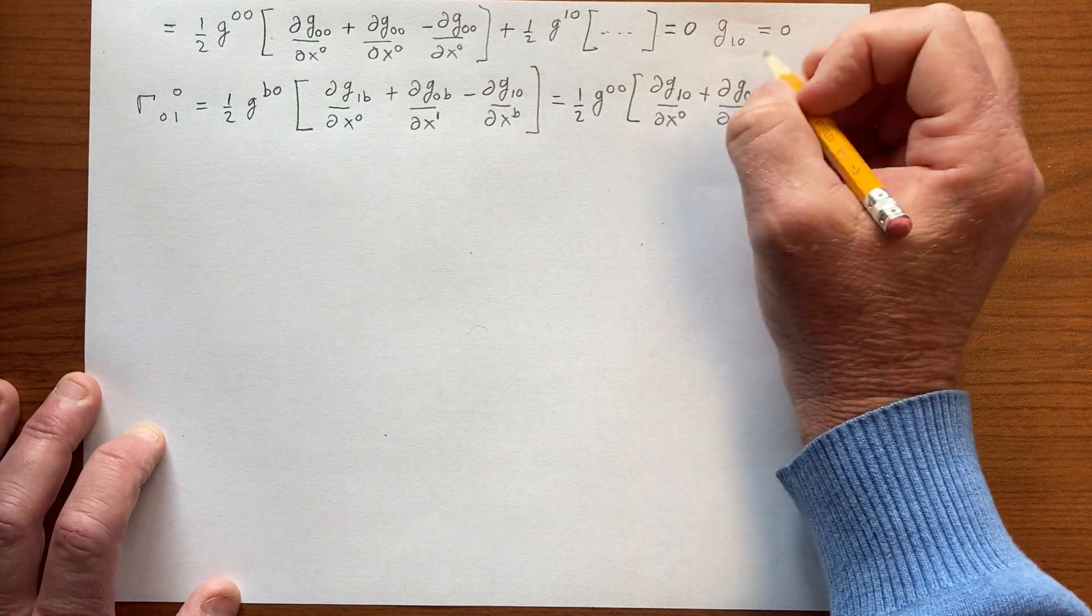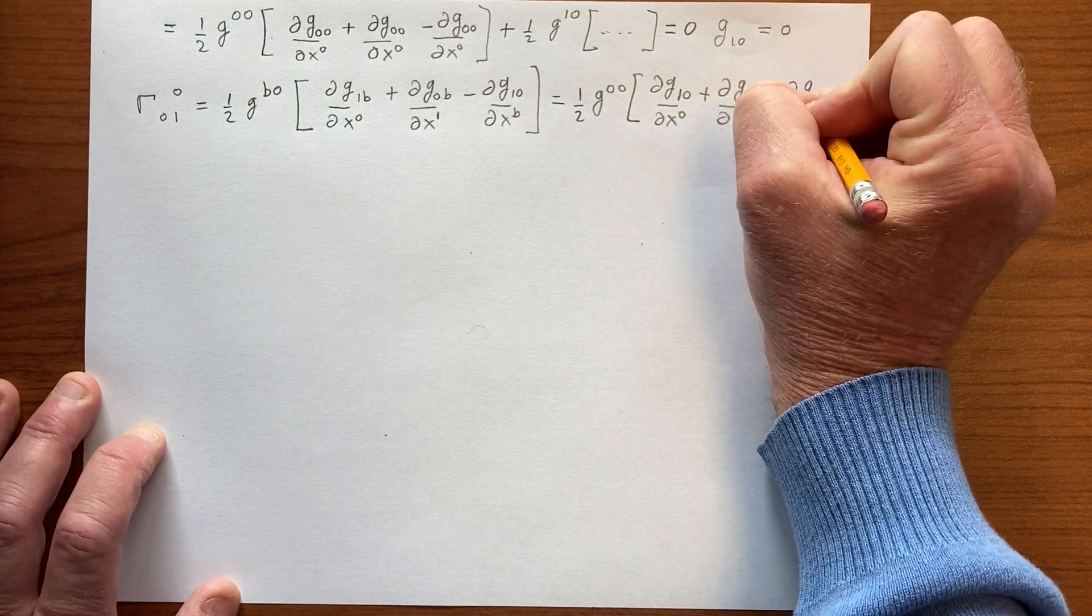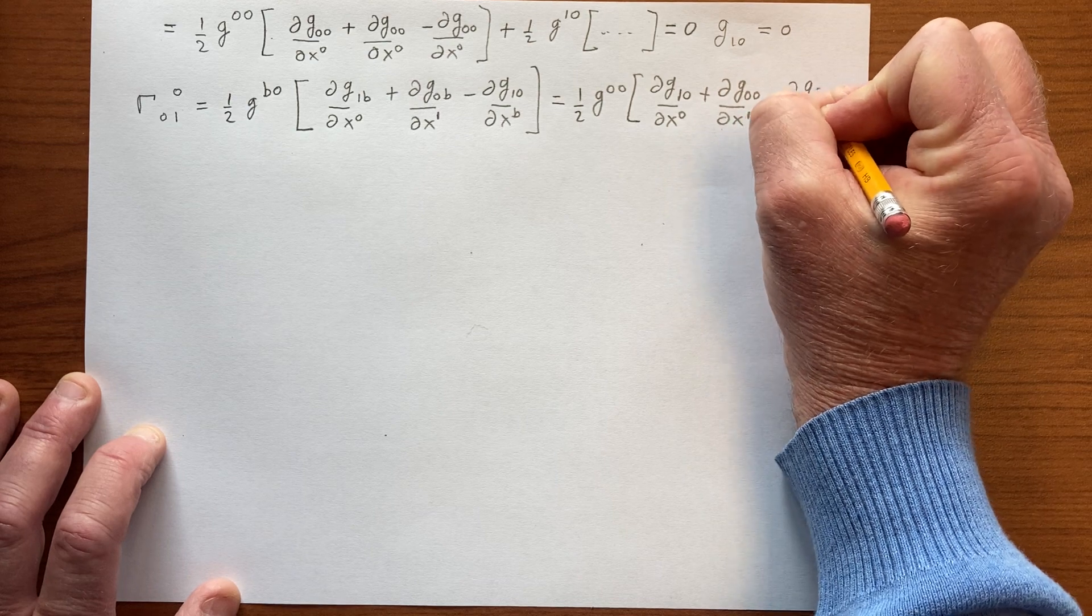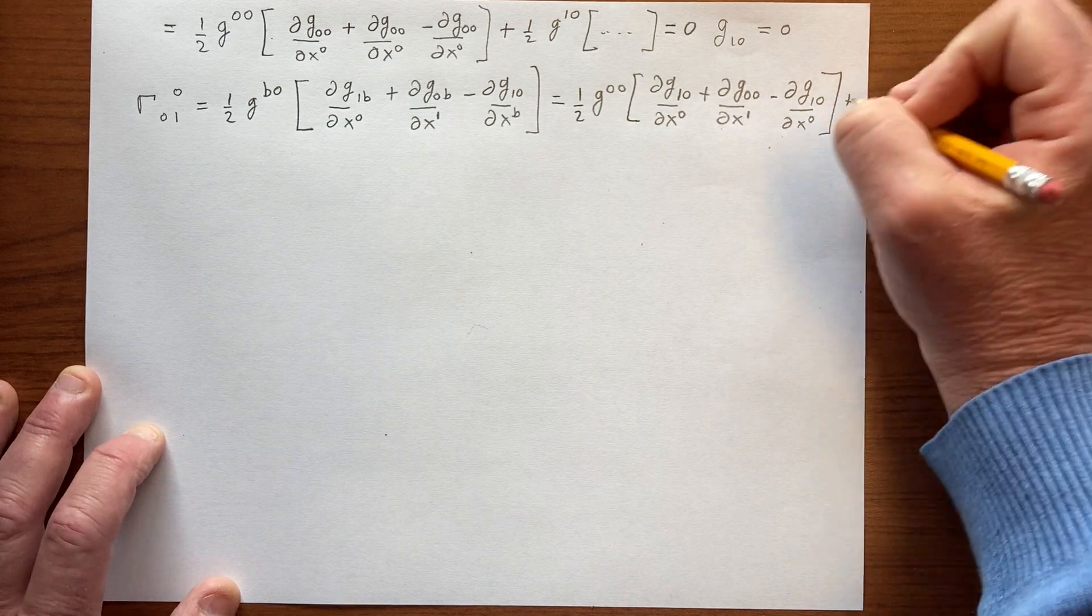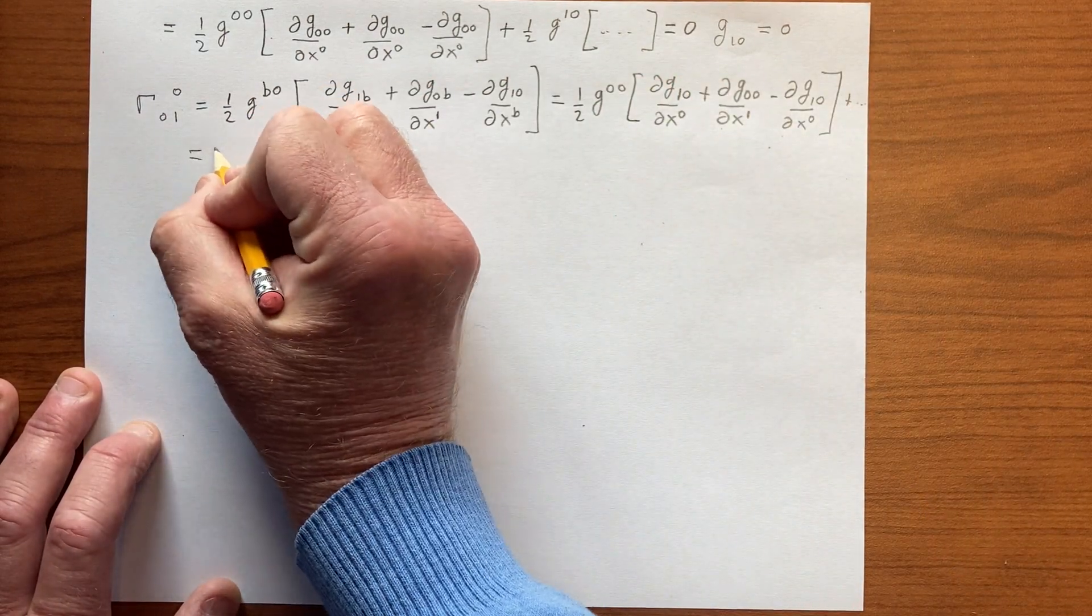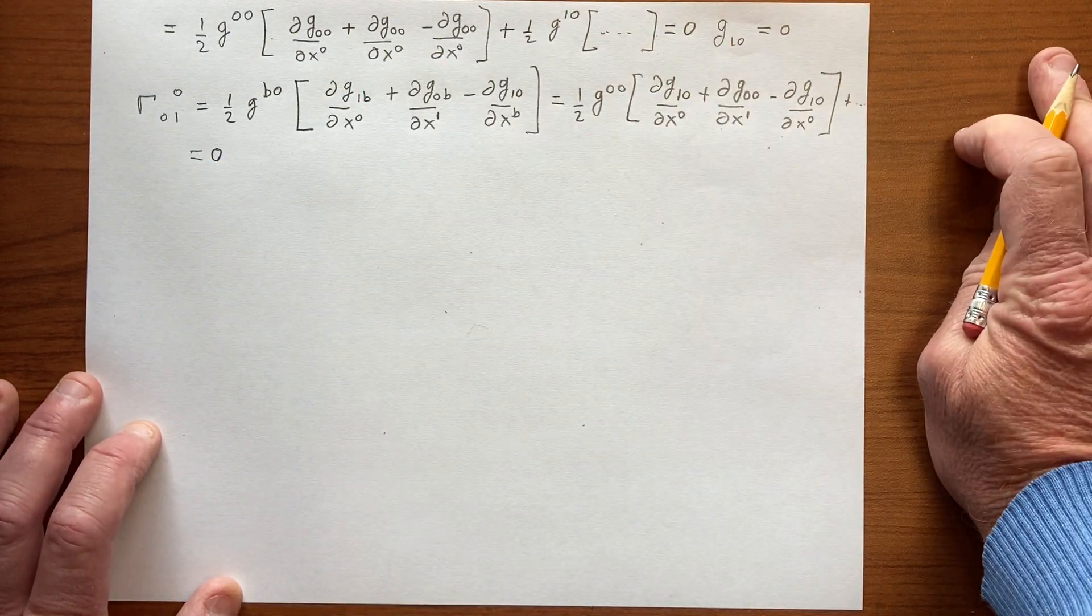Of course, that's a constant. That's 0, minus ∂g_10, which is that's 0. So derivative with respect to r doesn't matter, plus we have other terms, but they're all 0. So this whole thing becomes 0 as well.